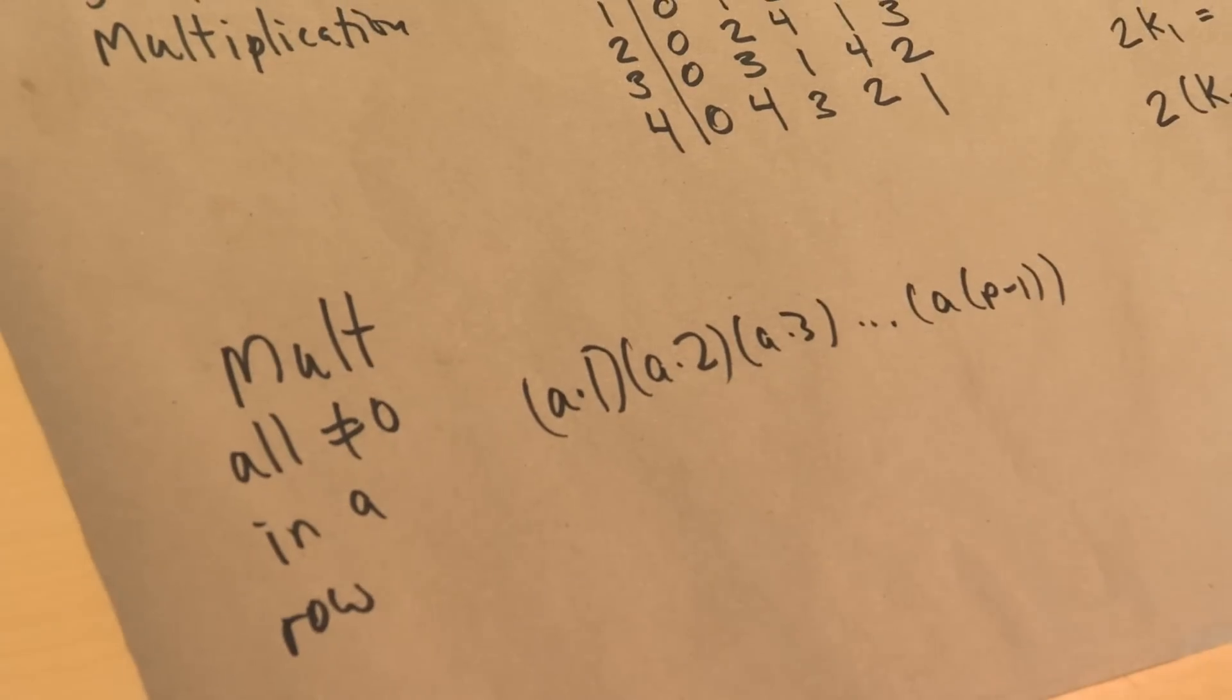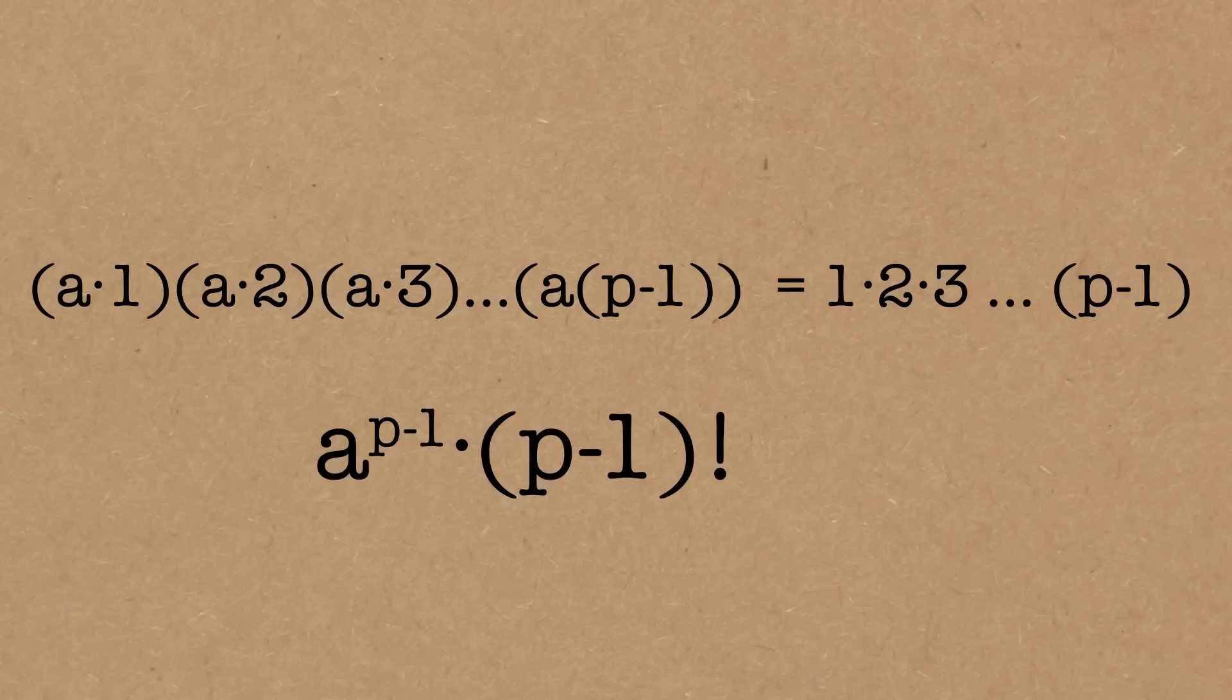But there's no repeats, so those are just the numbers 1 up to P minus 1 in some other order. And the order of the multiplication doesn't matter. So, on the P clock, that's the same thing as just multiplying 1 up to P minus 1, again, or P minus 1 factorial here, the same on both sides. So on the P clock, I get that, well, there are P minus 1 terms here. If I group all the A's together, on the left side I get A to the P minus 1 times P minus 1 factorial.